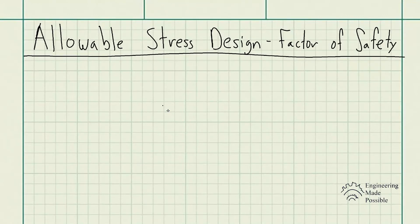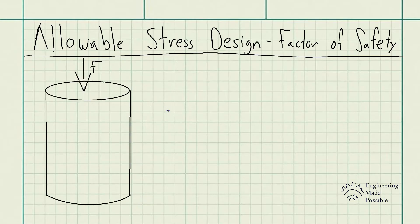Today we'll be going over allowable stress design and something often called the factor of safety. Let's use a previous example from a recent video where we have a column of some material with an external force F being applied to it.